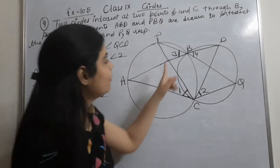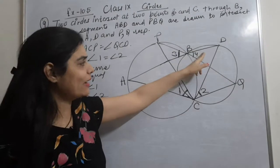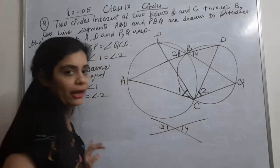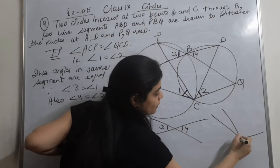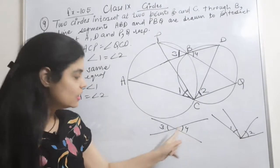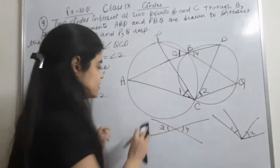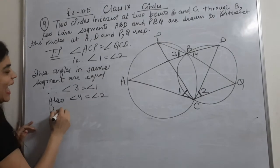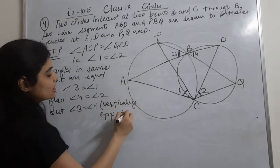Now looking at angle 3 and angle 4, and angle 1 and angle 2: angle 3 and angle 4 are vertically opposite angles, and angle 1 and angle 2 are also vertically opposite angles. So angle 3 is equal to angle 4 — vertically opposite angles.